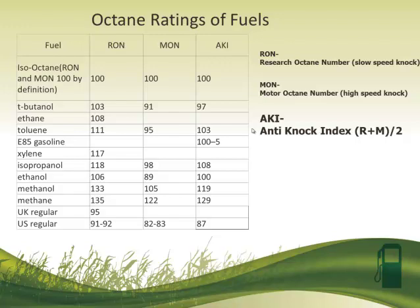So when you see a gas pump that says 87, that is referring to an anti-knock index of 87. You'll see this R plus M divided by 2 typically on the pump somewhere. It's important to know that there are different measures of octane because if we were to travel to other countries, we would see a sticker on their pump that might be much higher than what we see in the United States. The reason is that they are typically reporting the research octane number. So some of those very high octane ratings I've seen in my travels — you would perceive that their fuel has much higher octane than ours, but that's not necessarily true. They're just reporting the research octane number and we're reporting the average on our pumps.